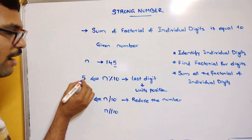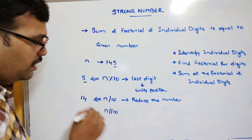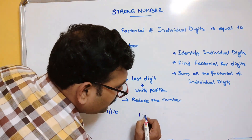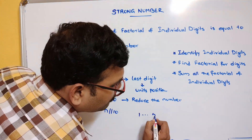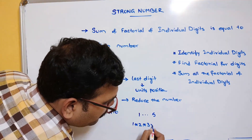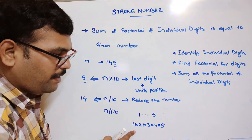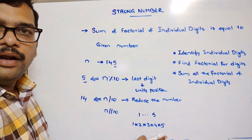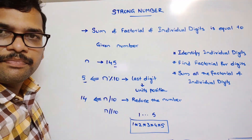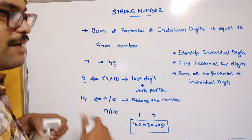After finding each digit, you need to find the factorial for that digit. To find the factorial, start with 1 and multiply up to that number — for example, 1 × 2 × 3 × 4 × 5 gives 5 factorial. You can implement this using either a for loop or a while loop, whichever you prefer.